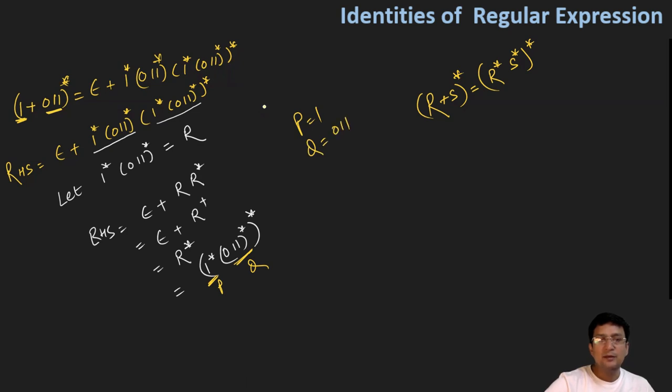This quantity looks like p star and q star and its closure, which can be written as p plus q and the entire closure. Now put the value of p as 1 and q as 0 1 1 and its closure. This is the same as what is written on the left-hand side.